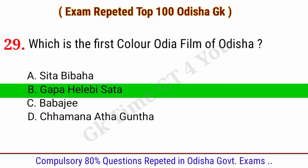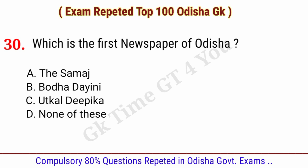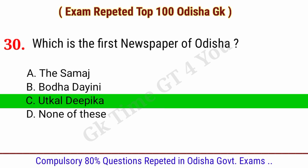Question number thirty: Which is the first newspaper of Odisha? Right answer, option C: Utkal Deepika.